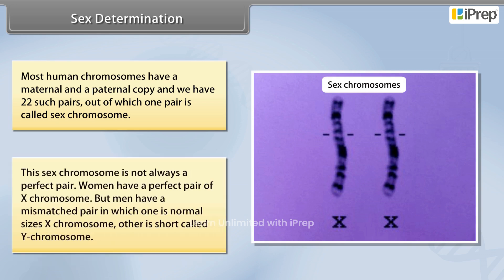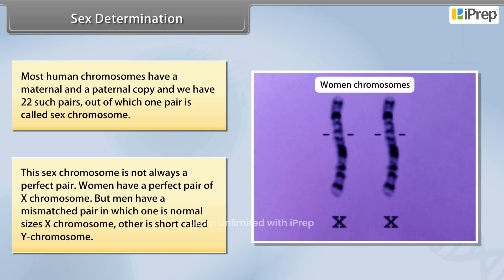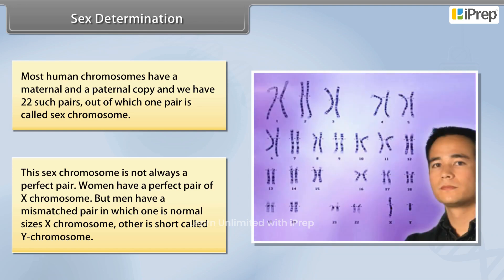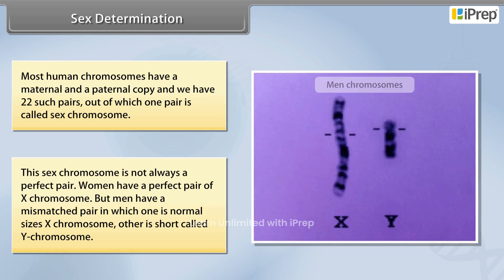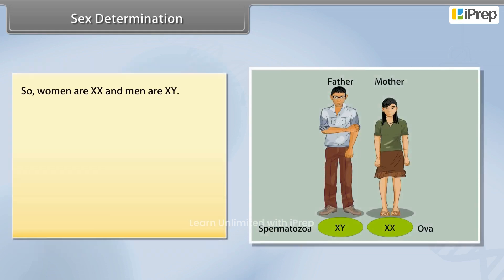This sex chromosome is not always a perfect pair. Women have a perfect pair of X chromosomes, but men have a mismatched pair in which one is a normal-sized X chromosome and the other is a shorter one called the Y chromosome. So women are XX and men are XY.